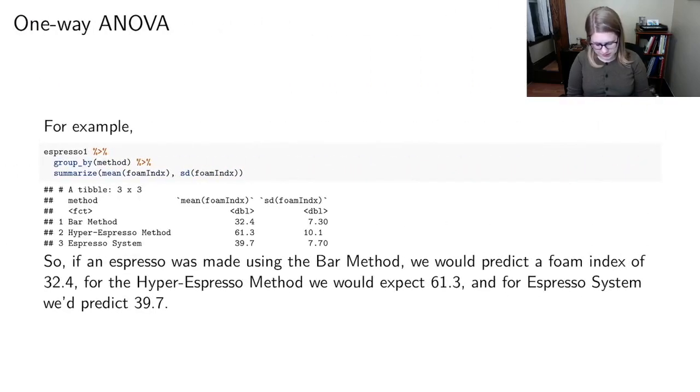So let's think about this example. This is some data related to methods of foaming espresso and so there's three different methods that you can use to foam espresso. There's the bar method, there's the hyper espresso method, and then there's the espresso system. And then we have something called foam index which is a measure of how foamy the espresso turns out to be. I think bigger numbers are better. So it looks like hyper espresso method has a higher mean than these other groups.